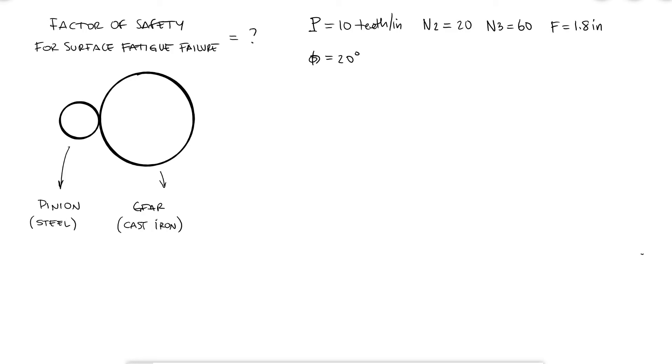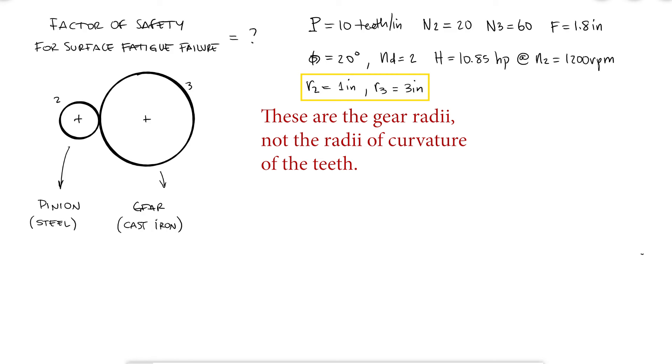For a design factor of 2, we found that the system could transmit 10.85 hp when the pinion was rotating at 1200 rpm. We also found the radius for the pinion and the radius for the gear. The tangential force that allowed that power transmission, the force that would not cause teeth to bend permanently with the design factor of 2, was found to be 570 pounds.